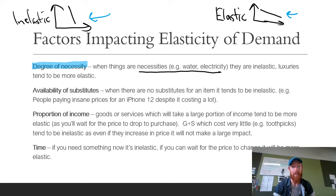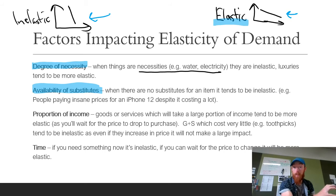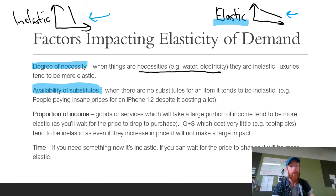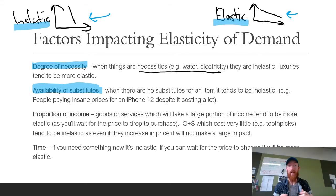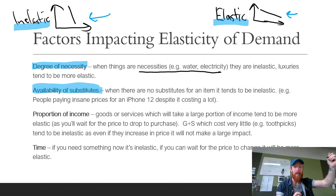Next is availability of substitutes — how many substitutes are available for that product. If there are a lot of substitutes available, it is more likely to be elastic because when the price changes, you'll just switch to another substitute. So the price goes up a little, demand goes down a lot. Whereas if there's not a lot of substitutes available, it's going to be more inelastic because when the price goes up, you're going to have to buy it anyway. iPhones work like this — even though there are many phones available, Apple tends to have almost a monopoly in how consumers behave because people are loyal to Apple products and don't see other phones as substitutes, so the price going up to around $2,000 has only decreased demand a little bit.